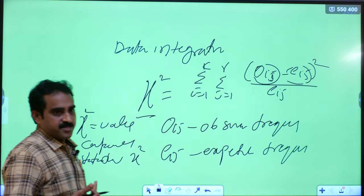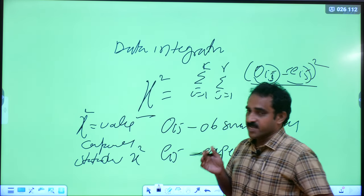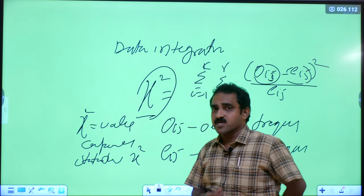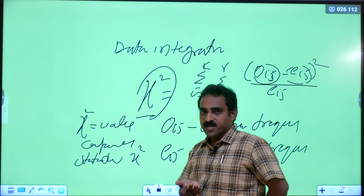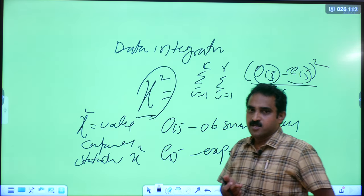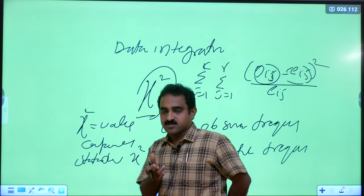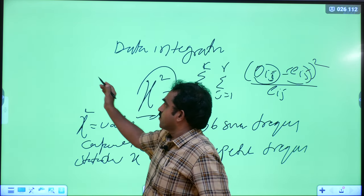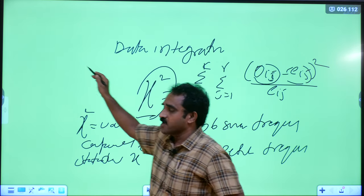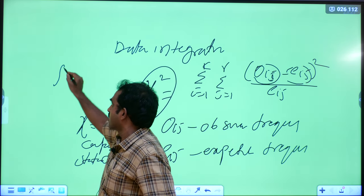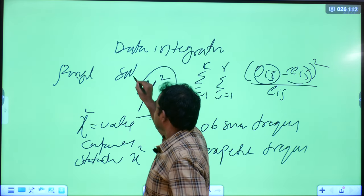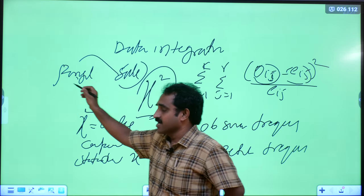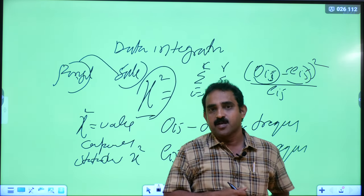Chi-square can be applied anywhere. Suppose a survey is conducted — political surveys, product opinions — whether a product is good or not, whether it is relevant to trends. Suppose in a festival season, like e-commerce, sales may depend on festivals. For example, during Pongal, whether sales depend on Pongal or not — that is called trend analysis, like in e-commerce platforms such as Amazon and Flipkart.